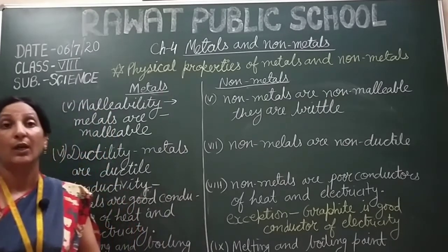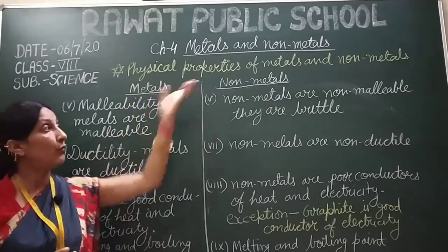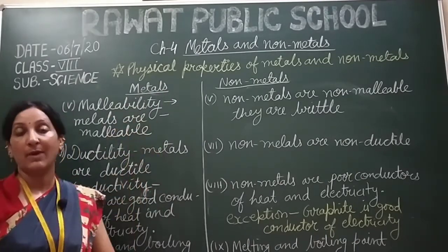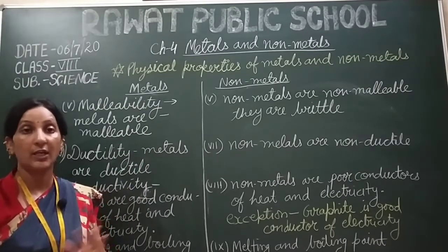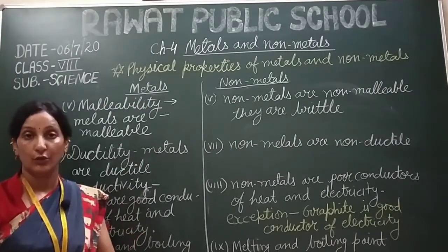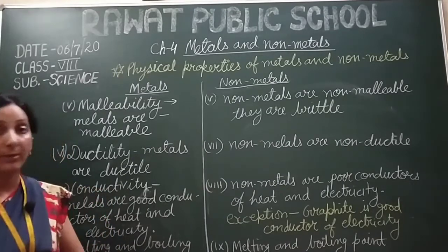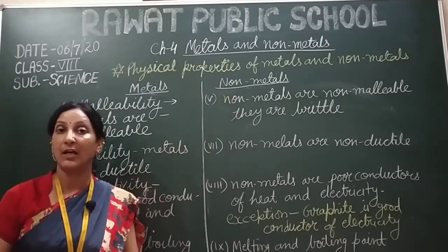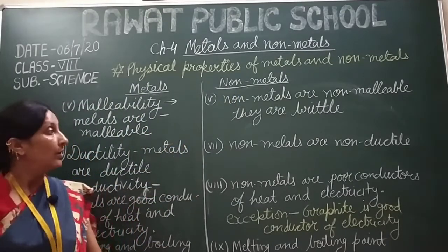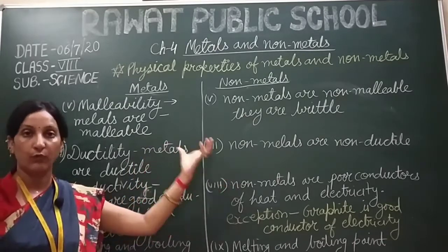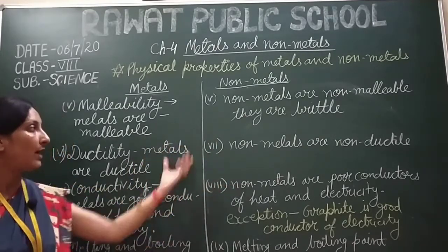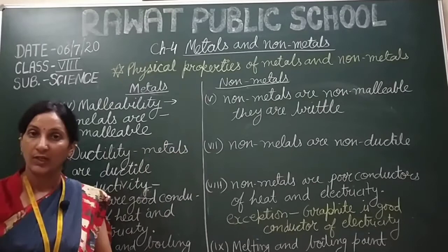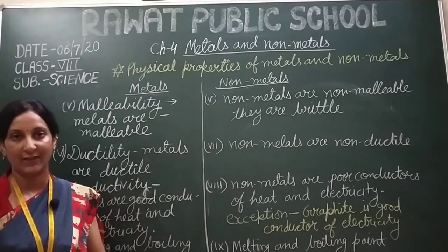This is all about the comparison of physical properties of metals and non-metals. We have compared all the physical properties of metals and non-metals. In the next lesson, we will study the chemical properties of metals and non-metals. You have to note them down in a tabular form and learn them along with their exceptions. That's all for the day. Thank you and have a nice day.